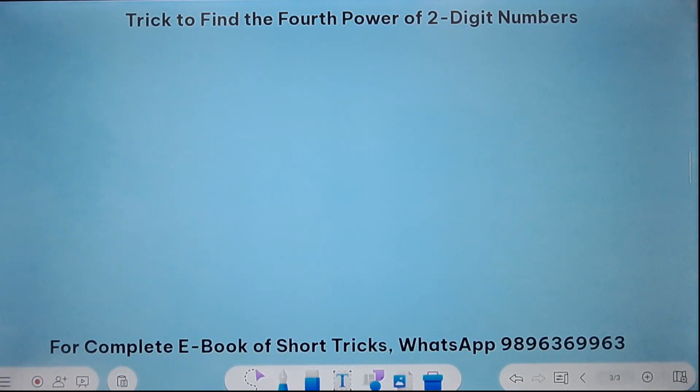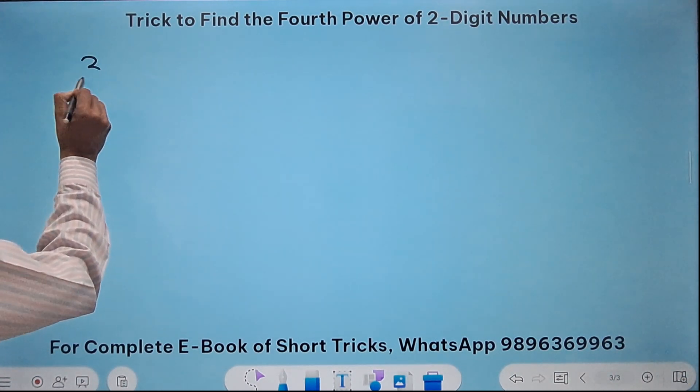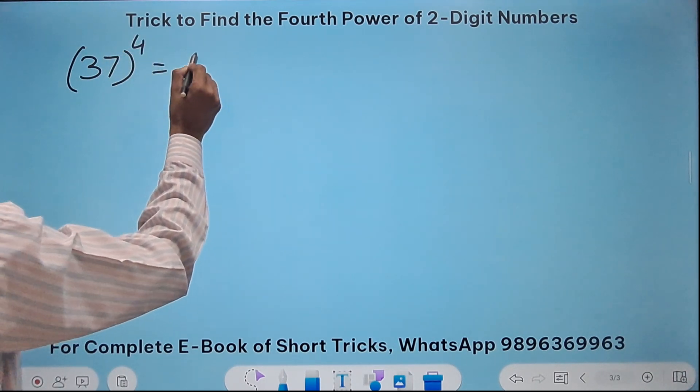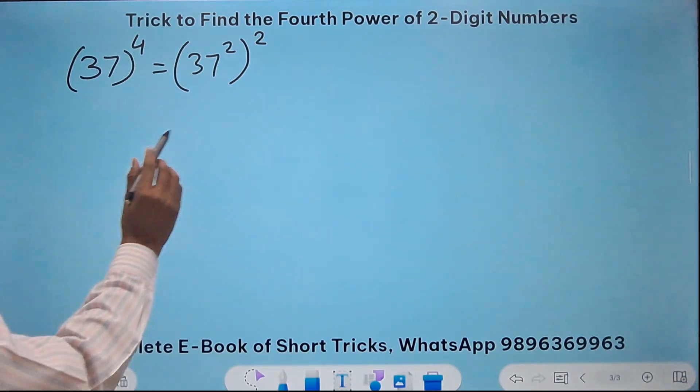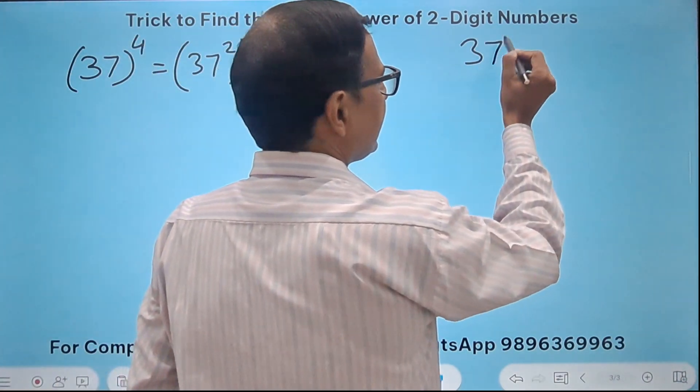Let's take one more question and then I'll give you a DIY, do it yourself question. So let's do 37 raised to power 4. So we know it is 37 raised to power square.